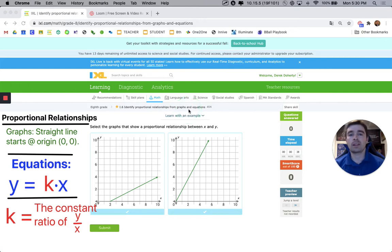So our big job now that we've been practicing proportional relationships is IXL thinks we should be able to spot from a graph or an equation pretty much right away. Does this show me the kind of relationship that's proportional or maybe something that's more complicated or a bit different?